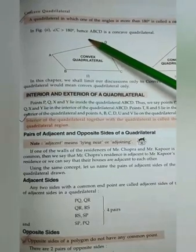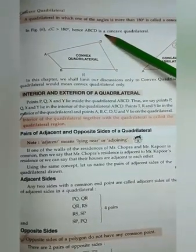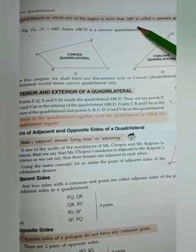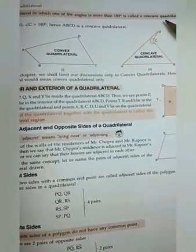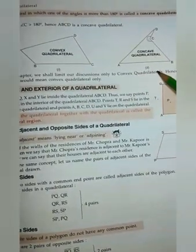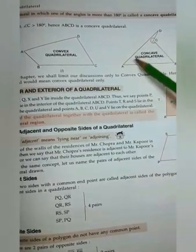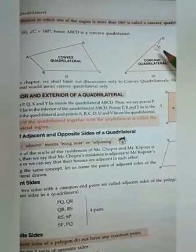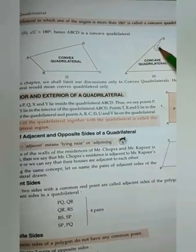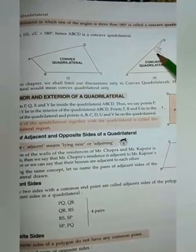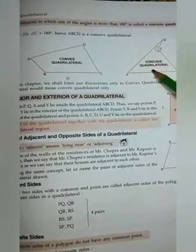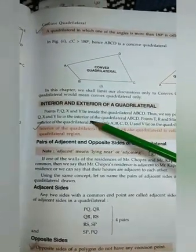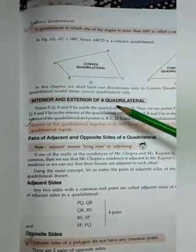Then concave quadrilateral. A quadrilateral in which one of the angles is more than 180 degrees is called a concave quadrilateral. Here, all angles are less than 180 degrees except angle C, which is more than 180 degrees. So it is known as a concave quadrilateral.